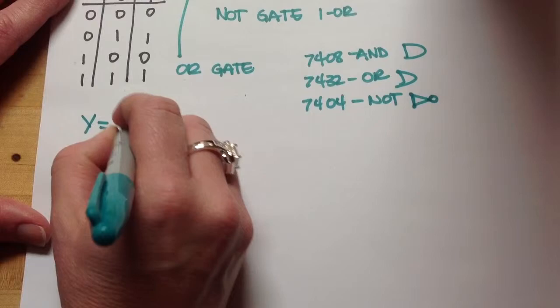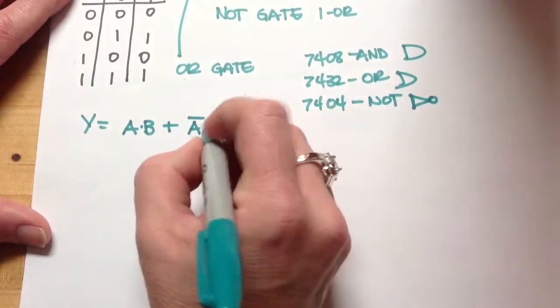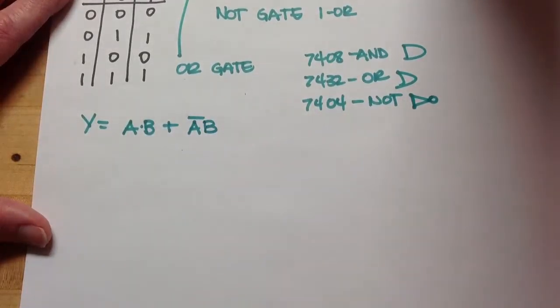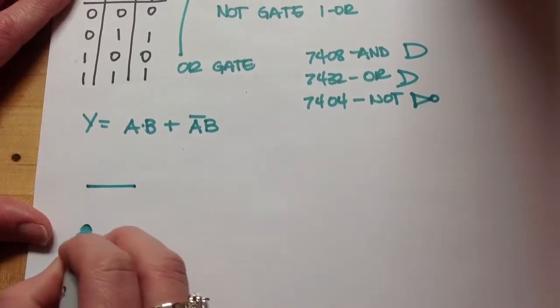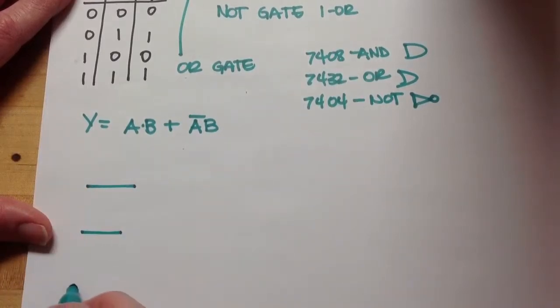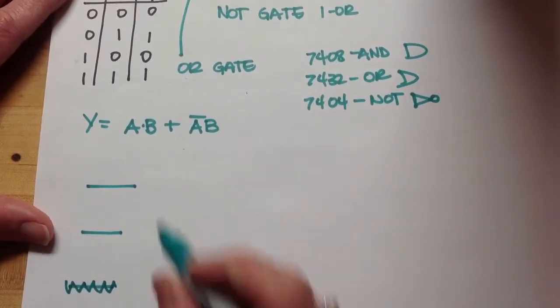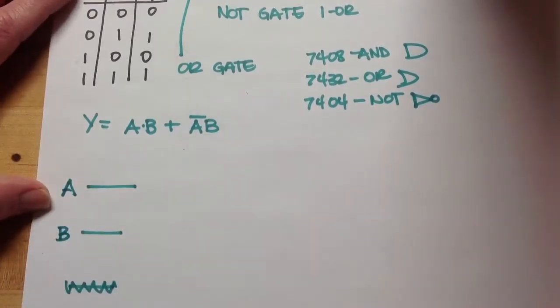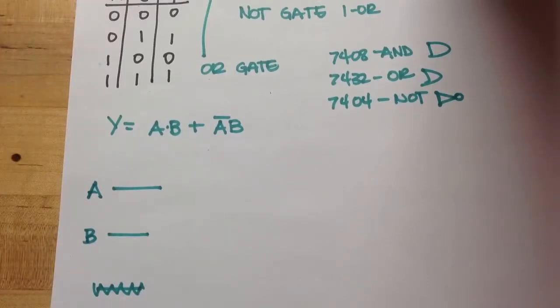Y equals A and B, or not A and B. And so, I'm going to start on the far side. My inputs are normally switches, it can be hard to draw them. I'm just going to draw a line and represent them as a start. When you simulate this, or when you breadboard it, those will actually come from switches.